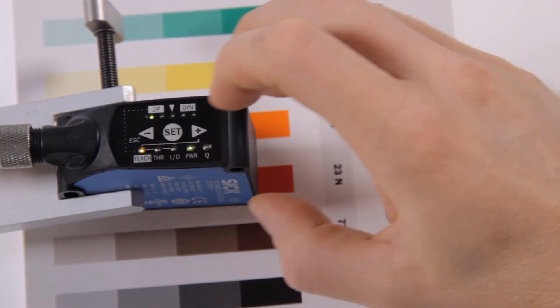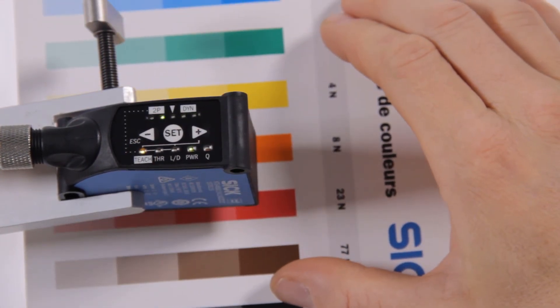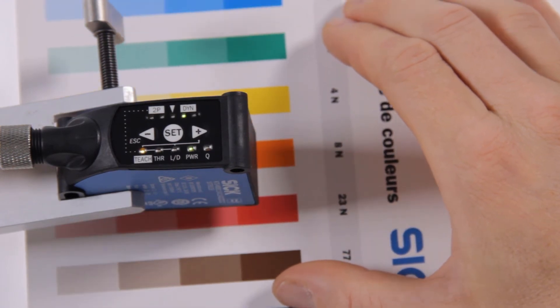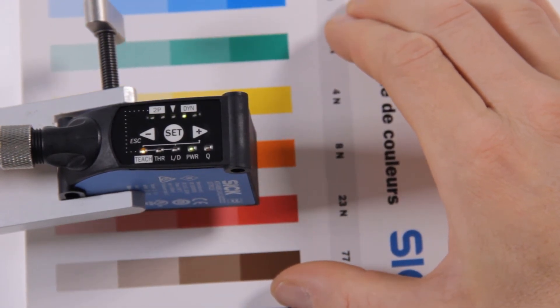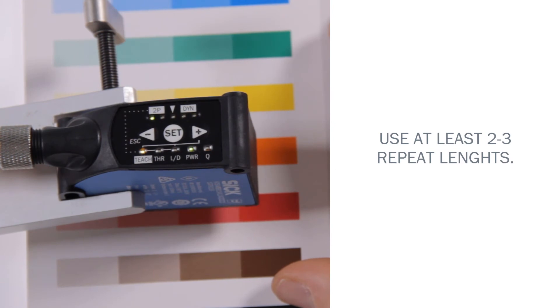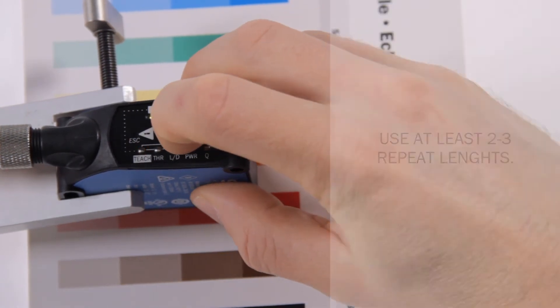Let mark and background move under the light spot for several times and stay on the background longer than the mark. We recommend to use at least two to three repeat length. When finished press the SET button again.